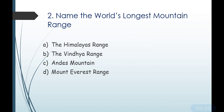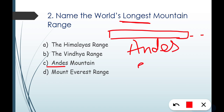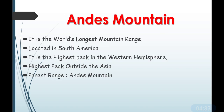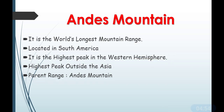The Andes Mountains are located in South America. It is the world's longest mountain range. It is also the highest peak in the Western Hemisphere, and the highest peak outside Asia. The parent range is the Andes mountain located in South America.